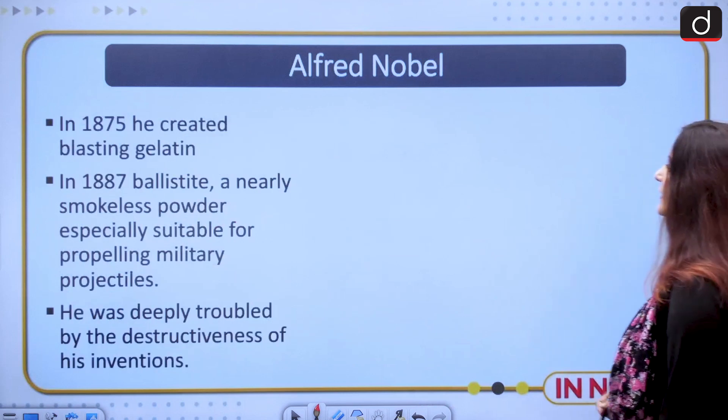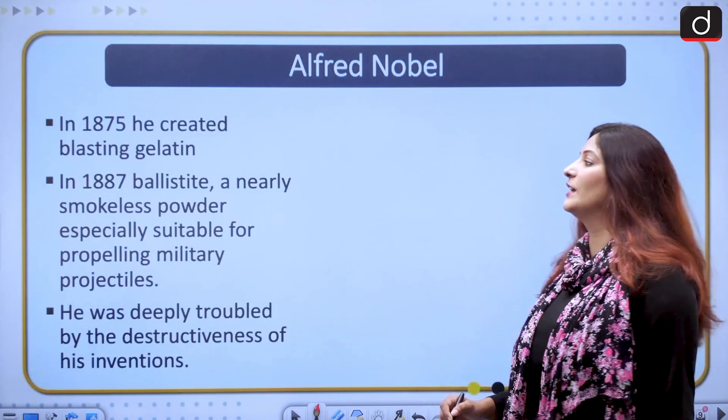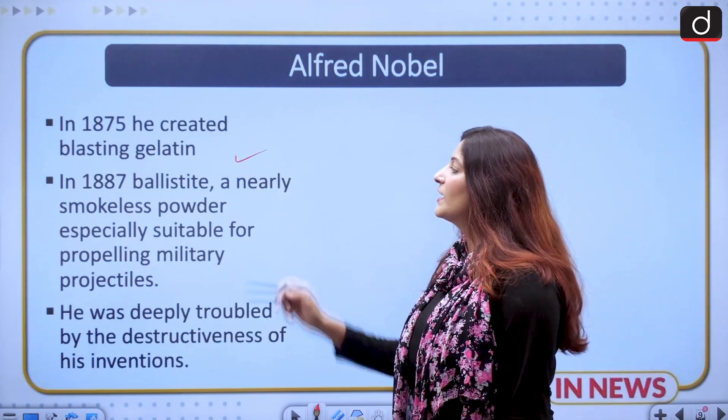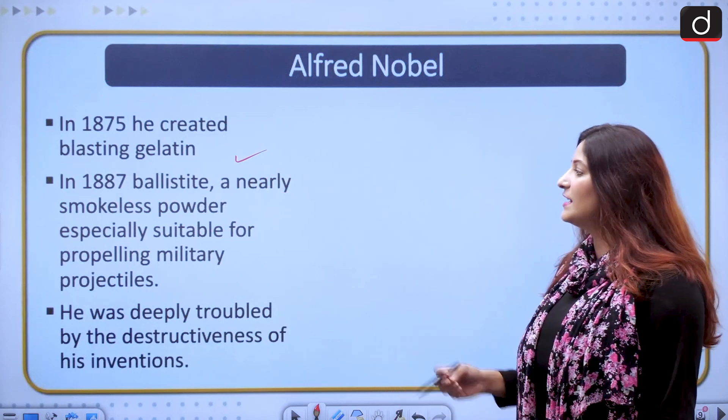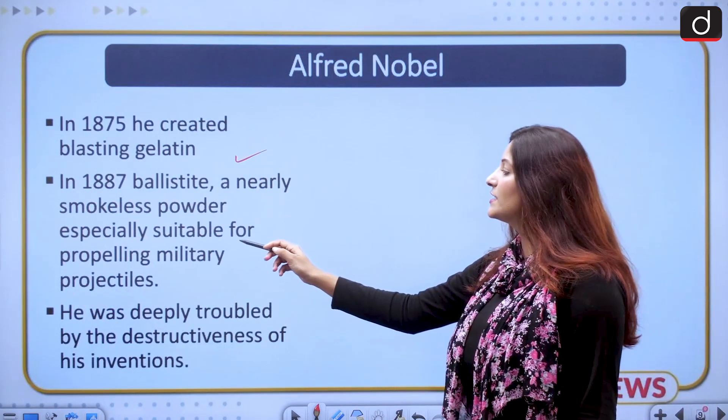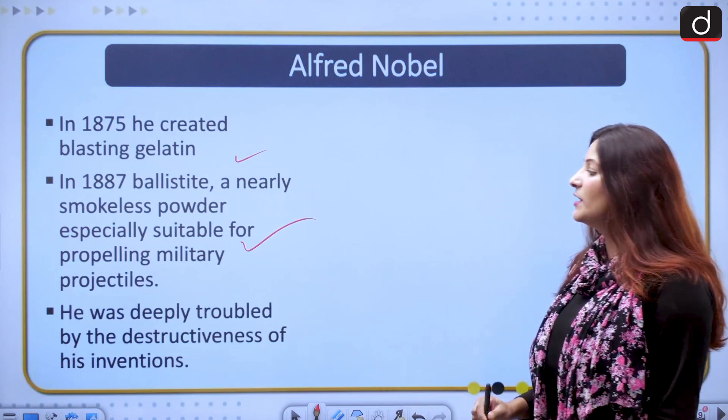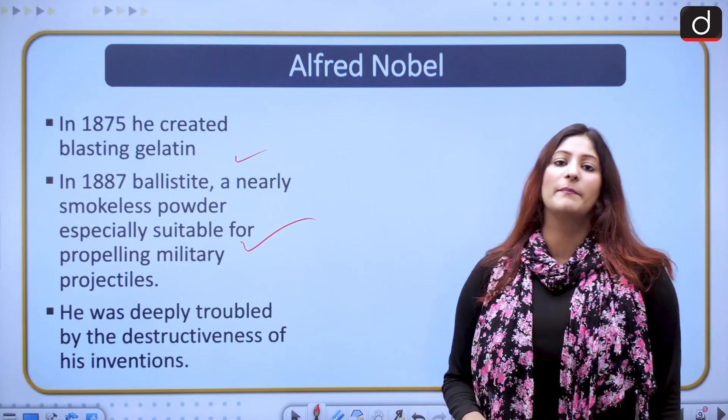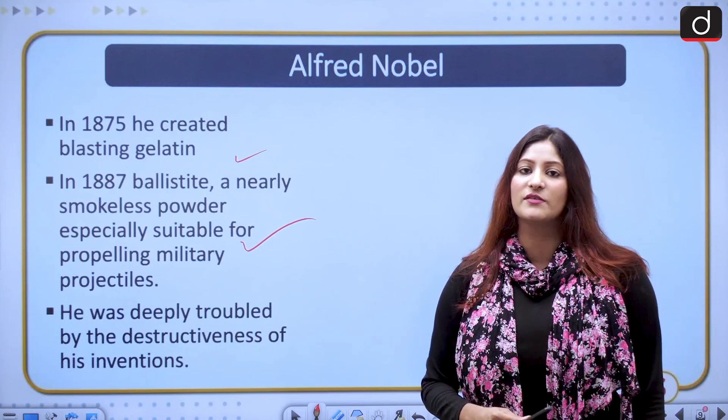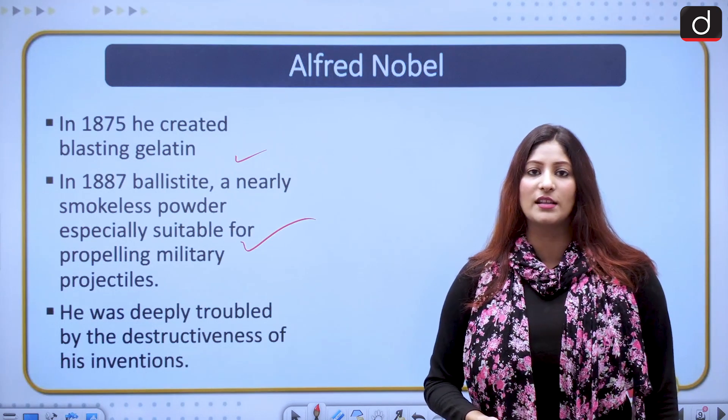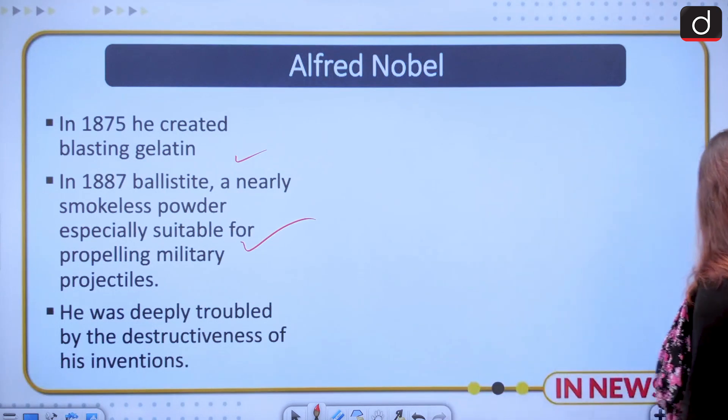In 1875, he created blasting gelatin. In 1887, ballistite, a nearly smokeless powder especially suitable for propelling military projectiles. But he wasn't happy by the way his inventions were being used, the destruction that they were causing. He was pretty disturbed by that.